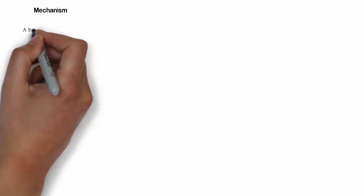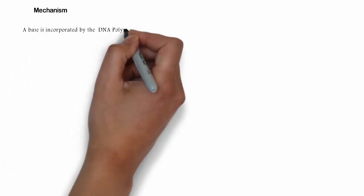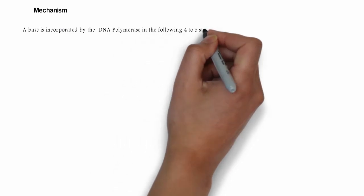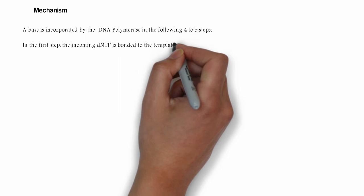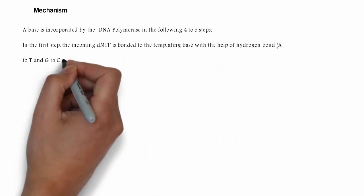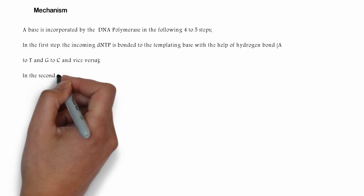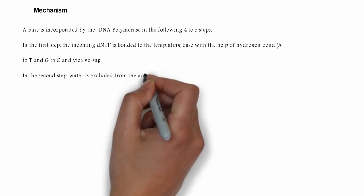Mechanism: A base is incorporated by the DNA polymerase in the following four to five steps. In the first step, the incoming dNTP is bonded to the templating base with the help of hydrogen bonds: adenine to thymine and guanine to cytosine, and vice versa.